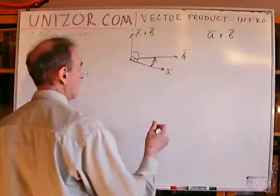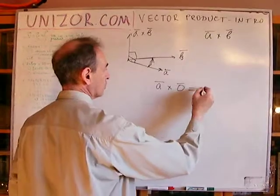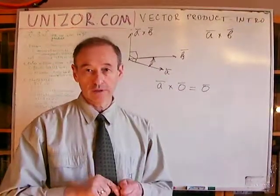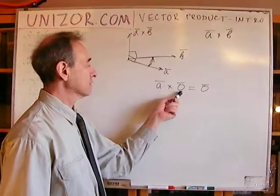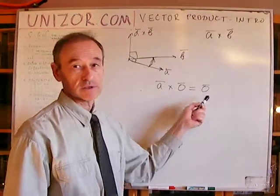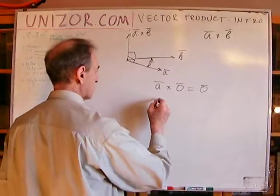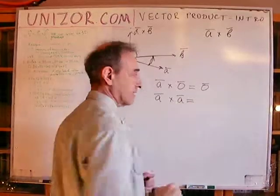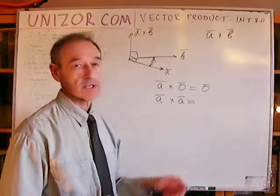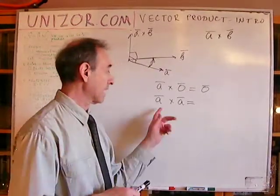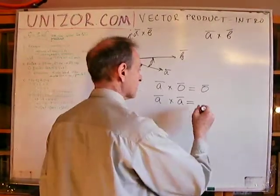Now let's talk about properties. First property: if you multiply any vector by the null vector, the vector product is a null vector — magnitude zero — because the magnitude of the null vector is zero. Second property: the vector product of a vector with itself is also zero. The magnitude is the product of the magnitudes times the sine of the angle between them, and since it is the same vector the angle is zero, so sine is zero. This is quite different from the scalar product, where multiplying a vector by itself gives the square of its length, since cosine of zero is one.